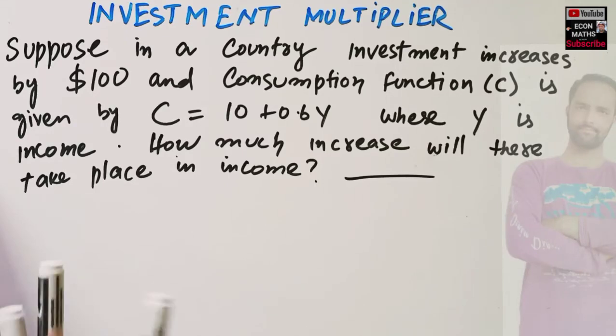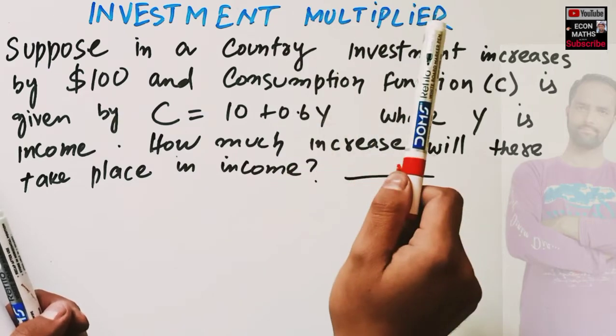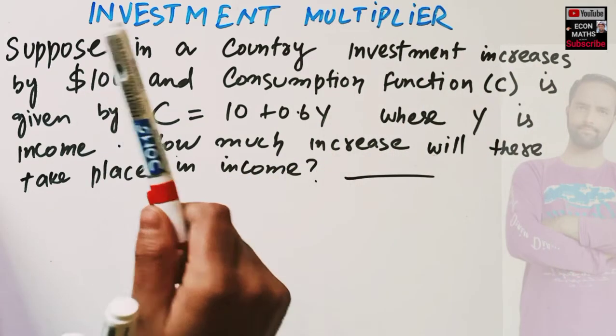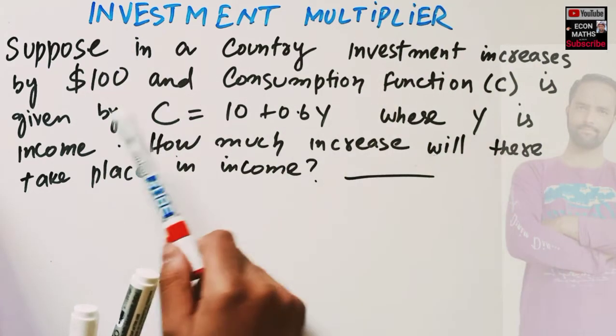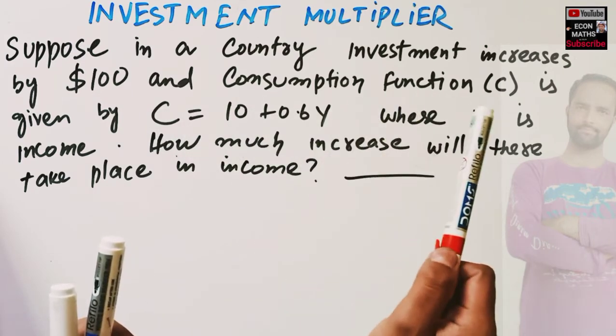In this video we will solve a problem on investment multiplier. The question is: suppose in a country investment increases by $100 and consumption function is given as C = 10 + 0.6Y where Y is the income.